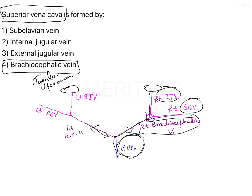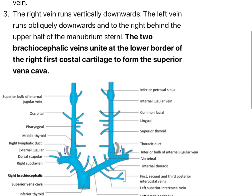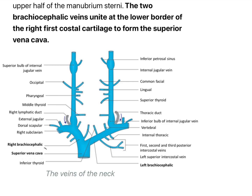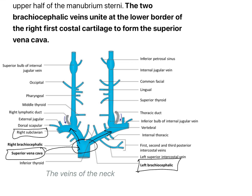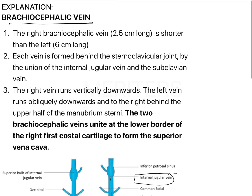Looking at the diagram: here you can see the Superior Vena Cava, and the two veins feeding into it — the left brachiocephalic vein and the right subclavian vein at their confluence. The left brachiocephalic vein receives drainage from the internal jugular vein. The right brachiocephalic vein is 2.5 centimeters long and is shorter than the left one, which is 6 centimeters long.